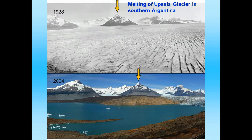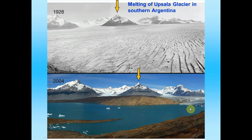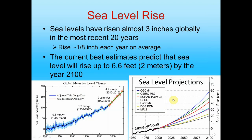Alpine glaciers are also melting. A glacier in the Andes Mountains of Argentina looked very different in 1928 compared to 2004 — a massive amount of ice has been lost, creating a lake where ice used to be. The terminal end of the glacier has retreated far up the valley, and it will continue to retreat as temperatures increase.